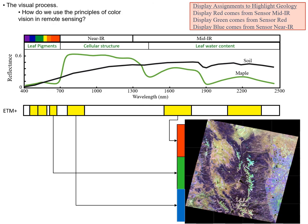This band combination is sensitive to differences in geology. In this case, red is displayed as green, near-infrared is displayed as blue, and mid-infrared — which is very sensitive to differences in geology — is displayed as red.